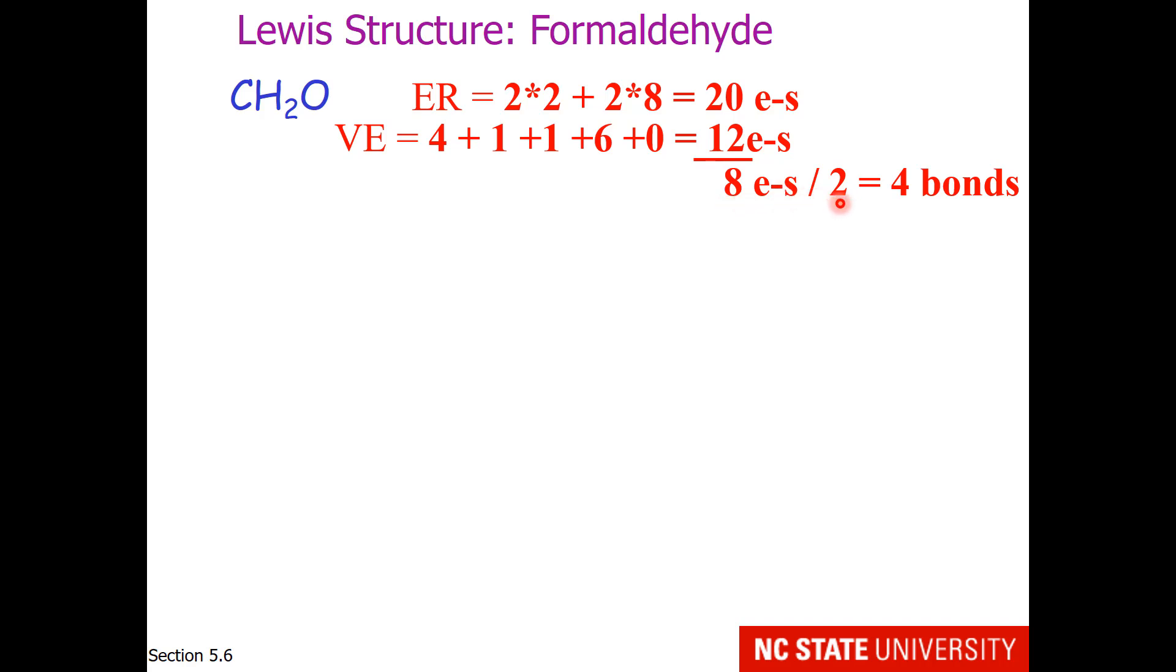Dividing that by 2, we need 4 bonds or 4 shared pairs. If we take 12 minus 8, the 4 electrons that are left, which are not in bonds, must be in non-bonds, which we call lone pairs. So 4 divided by 2 gives us 2 lone pairs.